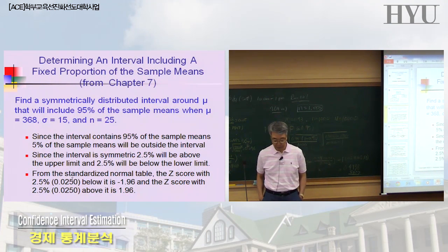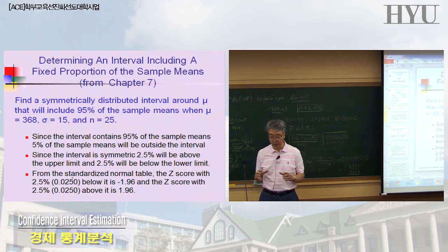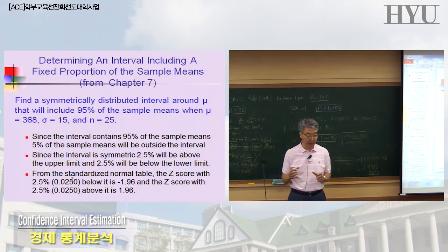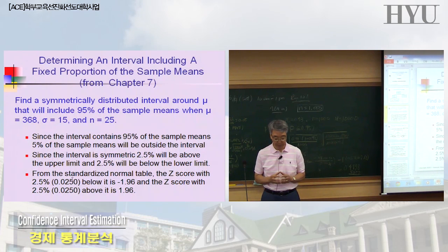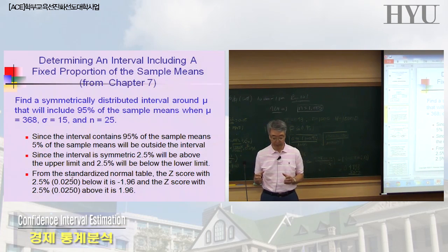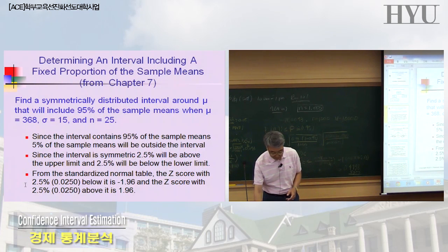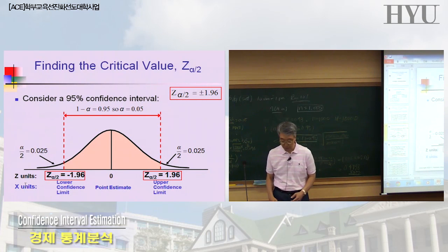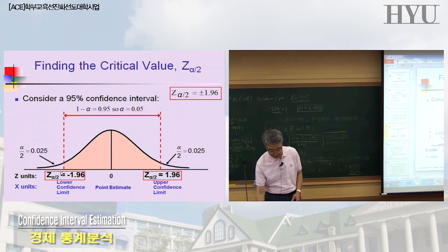This slide is from chapter 7. We covered the cereal box problem — a machine fills cereal into boxes, and we know the population mean is 368 and standard deviation is 15. If we select 25 boxes repeatedly, the interval of sample means that would contain 95% of the sample means has 5% outside, meaning 2.5% on each tail.